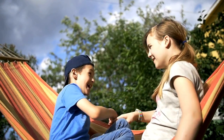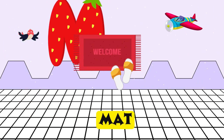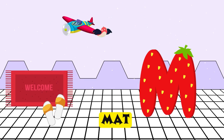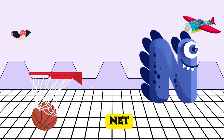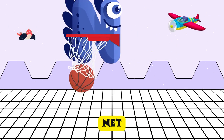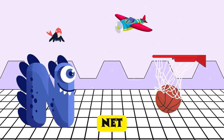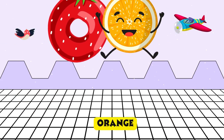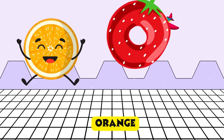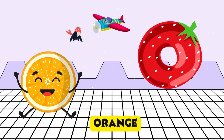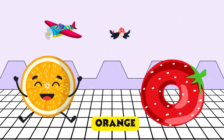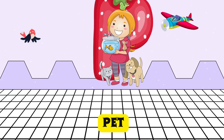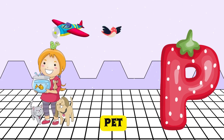M is for mat, m-m-mat. N is for net, n-n-net. O is for orange, o-o-orange. P is for pet, p-p-pet.